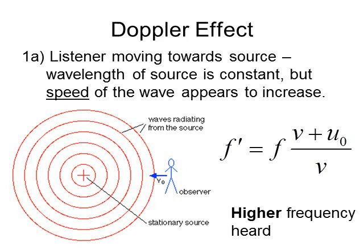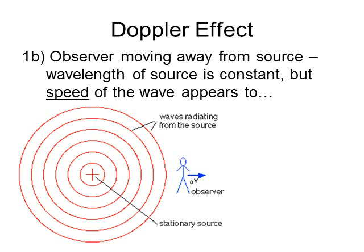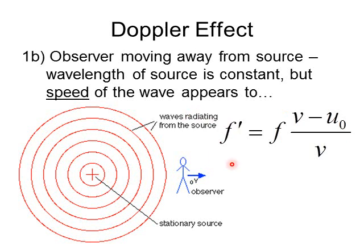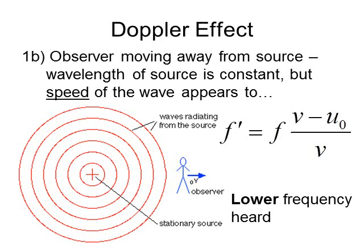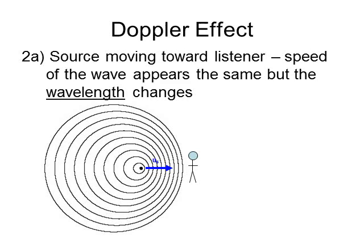If the observer is running away, the speed appears slower. Instead of adding, we subtract: F-prime equals F times (V minus U-sub-O) divided by V. This fraction is less than one because we're subtracting from the numerator, so the new observed frequency is lower — just as we'd expect, since the waves hit the person less often, like in our paintball example.